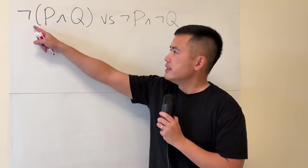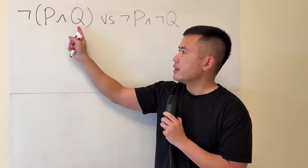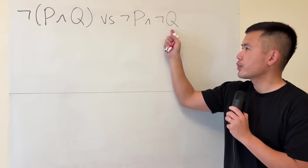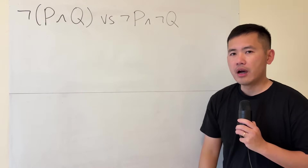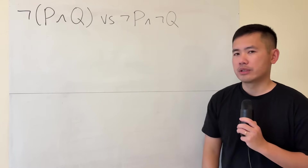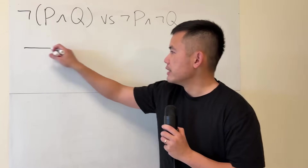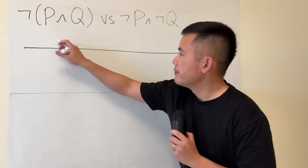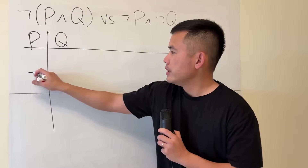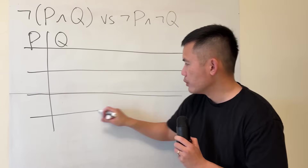We would like to know if not (P and Q) versus not P and not Q are logically equivalent or not. To figure this out, we will just have to use a truth table. Let's go ahead and set that up. We have P and Q, so we need a total of four rows.